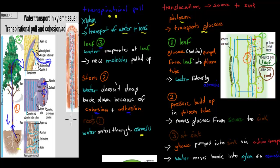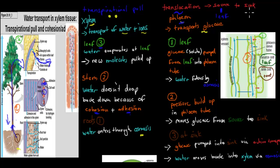All of this is passive — it doesn't require any energy. Whereas with the phloem we have active transport, and the theory of how glucose moves in phloem is called translocation. Basically it starts at a source — where it's produced, which is the leaf — and then it will move towards where it's needed, for example the roots or the stem. It does so by first being produced at the leaf, where glucose is pumped from the leaf into the phloem tube.